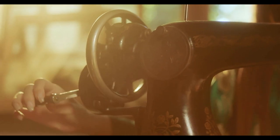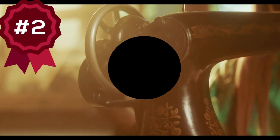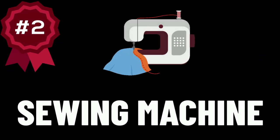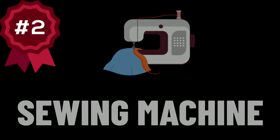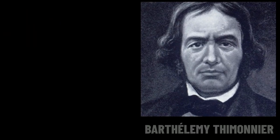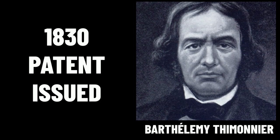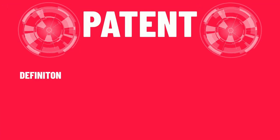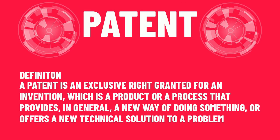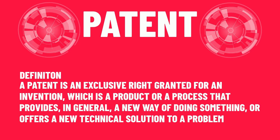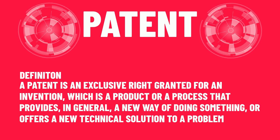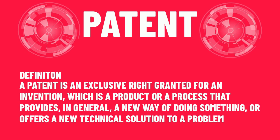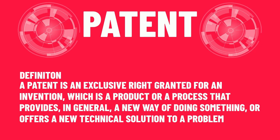It's time to move on to our next Victorian invention: the sewing machine. Throughout human history all sewing and stitching was done by hand with a needle and thread. But that all changed when Bartholomew Thimonnier invented the sewing machine in 1830 and had his patent issued to him. The word patent means an exclusive right granted for an invention — a product or process that provides a new way of doing something or offers a new technical solution to a problem.